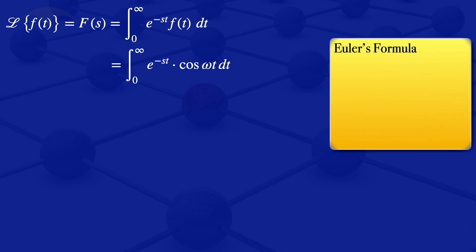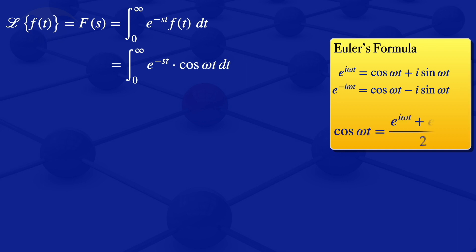Euler's formula gives us: e to the i omega t equals cosine of omega t plus i sine of omega t, and e to the minus i omega t equals cosine of omega t minus i sine of omega t. Adding those two equations gives 2 cosine of omega t equals e to the i omega t plus e to the minus i omega t, so cosine of omega t equals e to the i omega t plus e to the minus i omega t, all divided by 2.